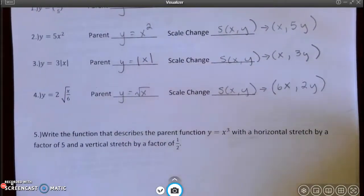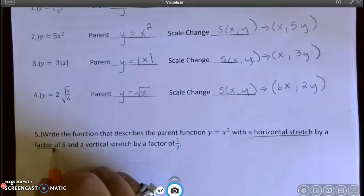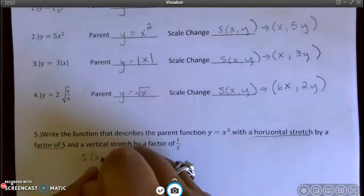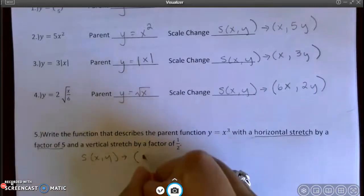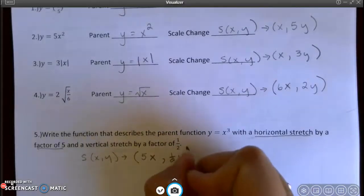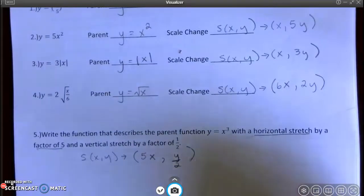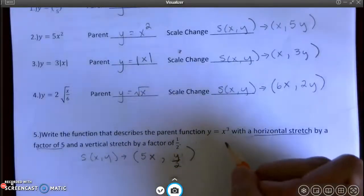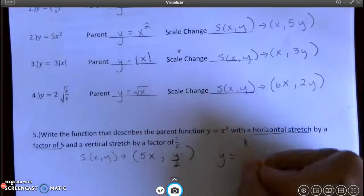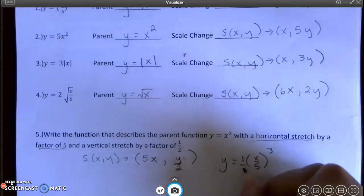The next one. Write the function that describes the parent function, y equals x cubed, with a horizontal stretch by a factor of 5. So we want the scale change to stretch it by 5, so that's 5 times x, and a vertical stretch by a factor of 1 half. So 1 half y. I could also just write this as y divided by 2, either way. So when I go to write this using this equation, y equals, I'm going to make x divided by 5, because it lies in the equation, cubed, and I want the whole thing multiplied by a half.